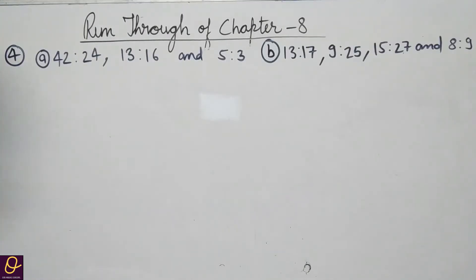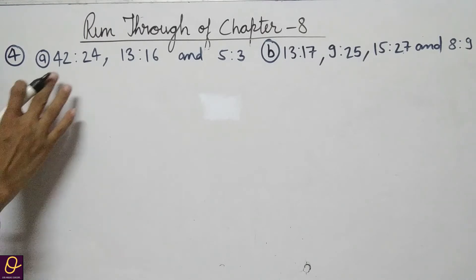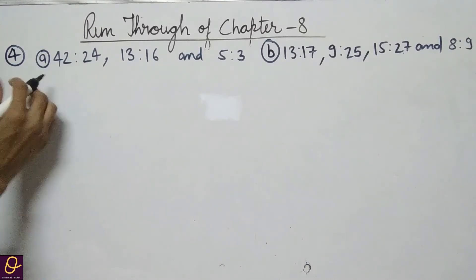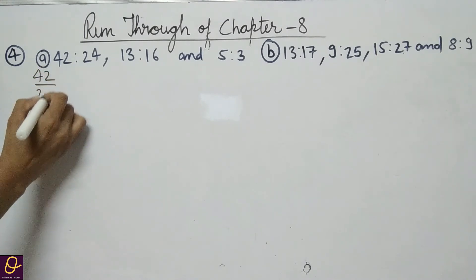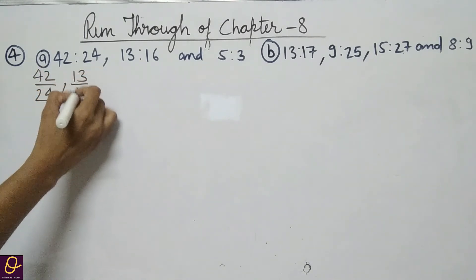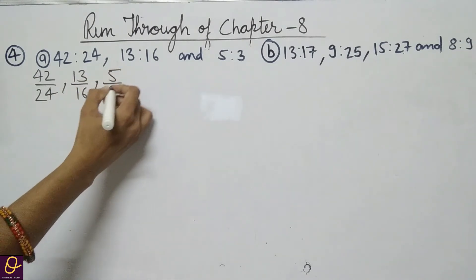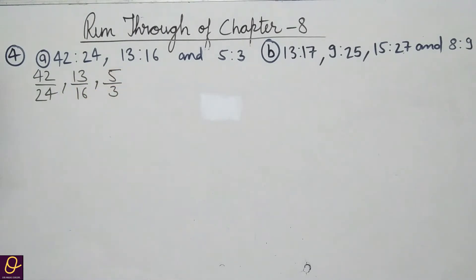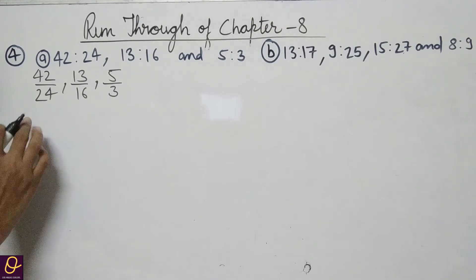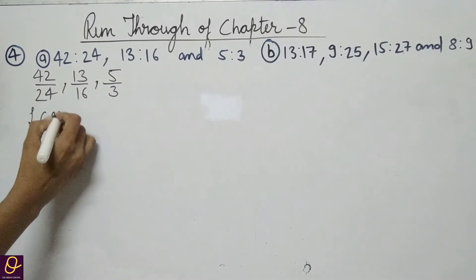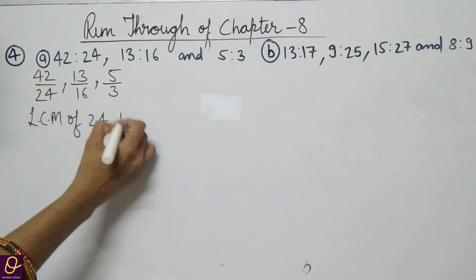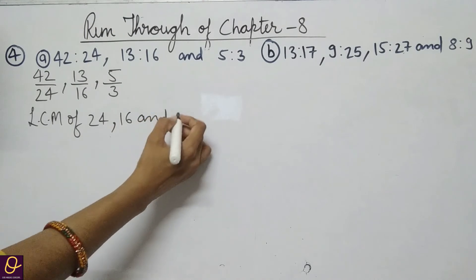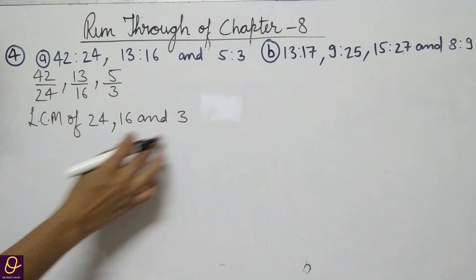Now question number 4: write the following ratios in ascending order. Ascending order means increasing order. We write the ratios as fractions: 42 divided by 24, then 13 divided by 16, then 5 by 3. To compare, we will take the LCM of the denominators 24, 16, and 3.